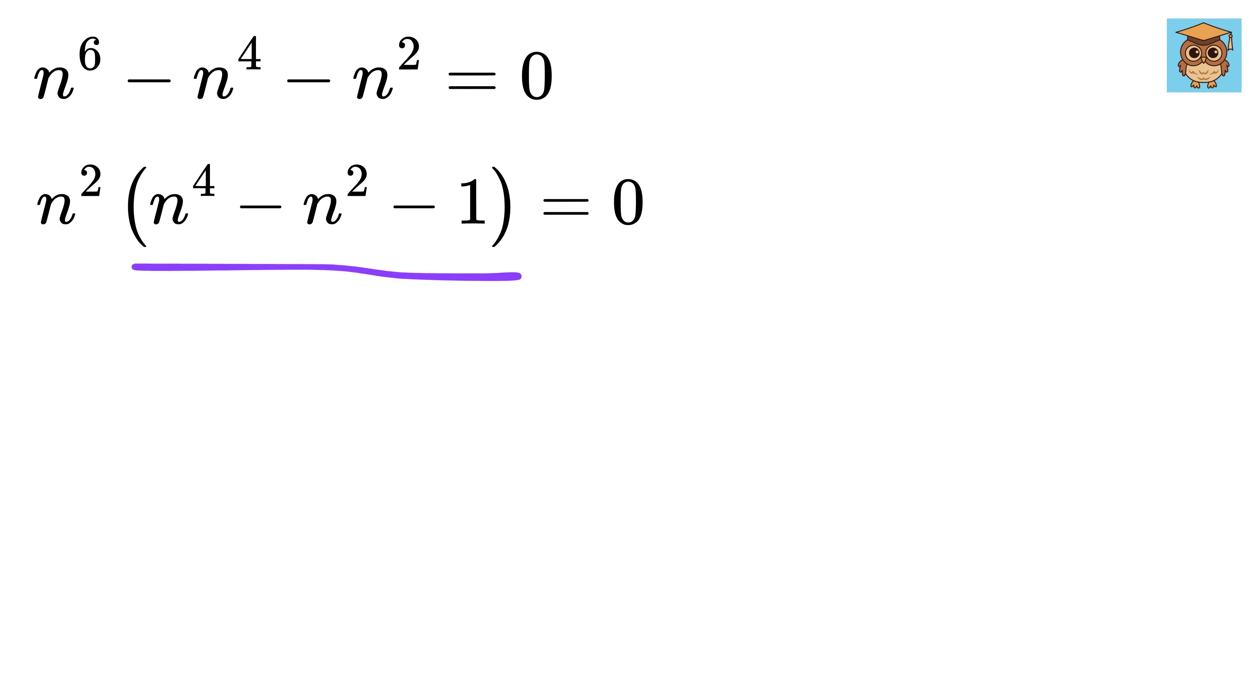Now consider this equation. Let us call this n square as x. So the equation will become x square minus x minus 1 equals 0, which is a quadratic equation.